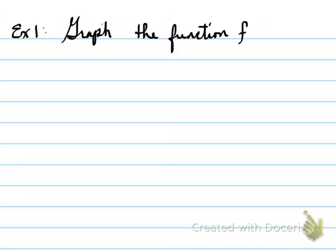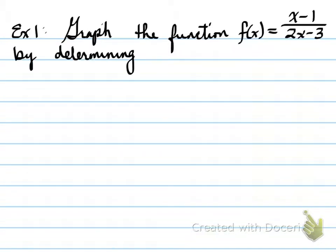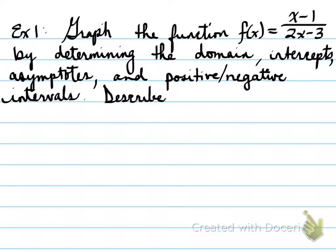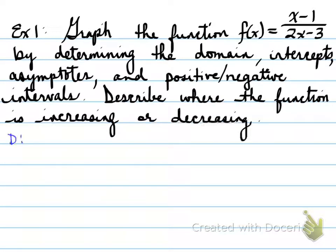Example 1: graph the function f(x) = (x − 1) / (2x − 3) by determining the domain, intercepts, asymptotes, and positive-negative intervals. You're also asked to describe where the function is increasing or decreasing, and to look at the behaviors of the arrows — the behaviors around the asymptotes and the end behaviors.